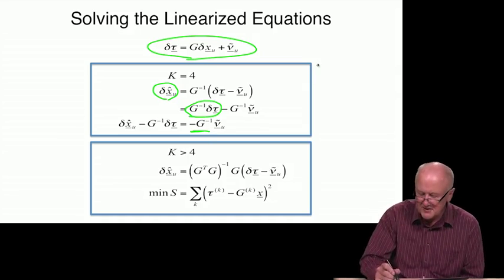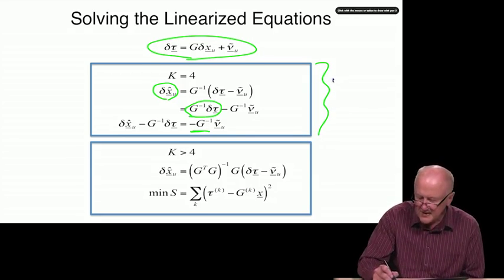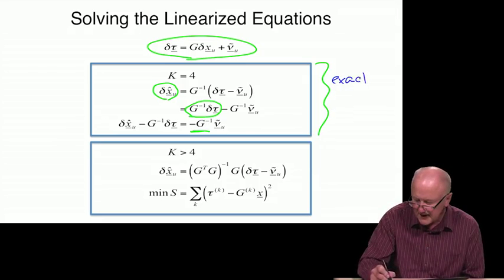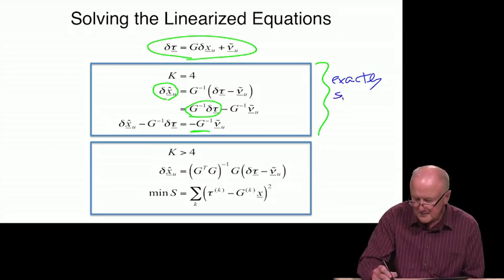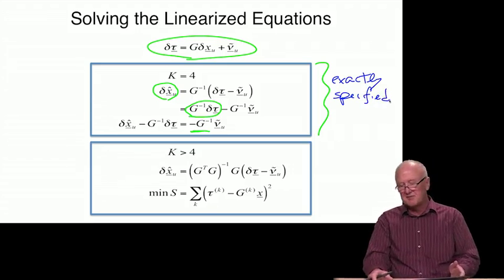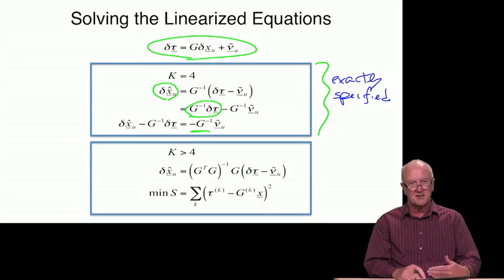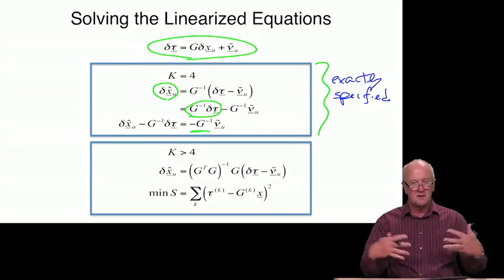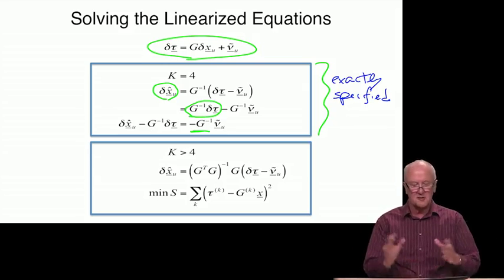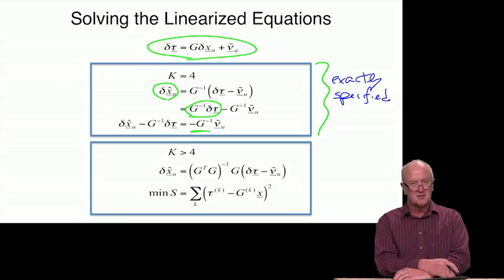That's part of the beauty of this linearized set of measurement equations and certainly something that we make great use of in GPS. Look, we can call this case here the exactly specified case. An algebraist would say that the equations are exactly specified. Provided that G inverse exists, you can go ahead and solve them with no information left over. You're going to use it all to go ahead and find your best solution for delta x.